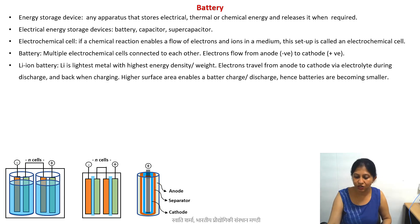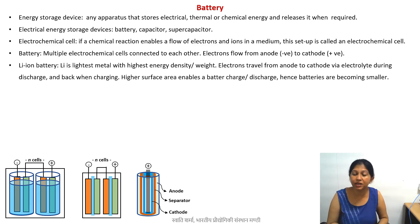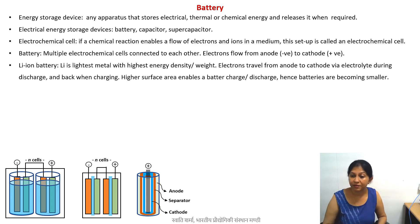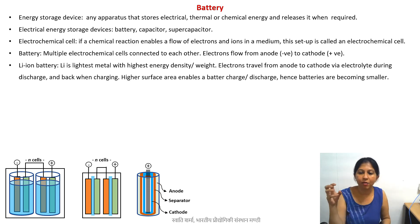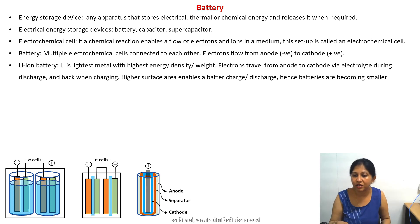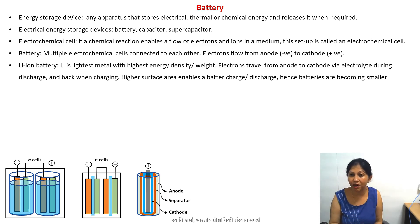One specific type of battery you must have heard of is the lithium ion battery. Lithium is the lightest metal, and batteries made of it have the highest energy density per weight. A tiny lithium ion can go inside a certain material and come out — that is what we call charge and discharge. Based on the lithium ion, we make rechargeable batteries, known as lithium ion batteries.